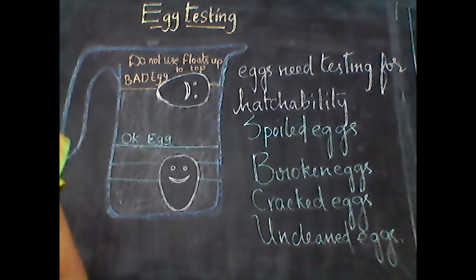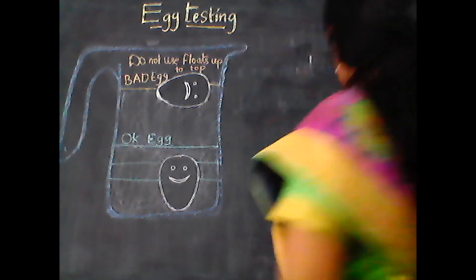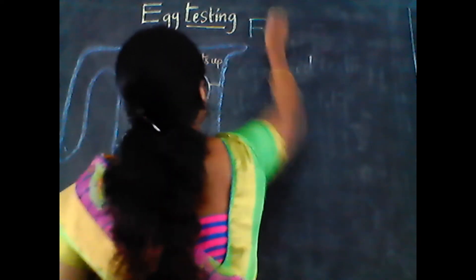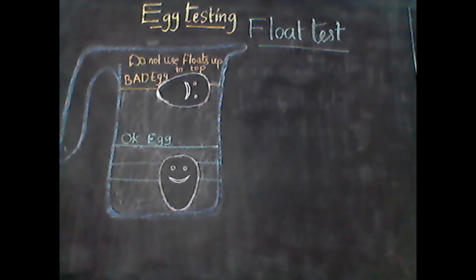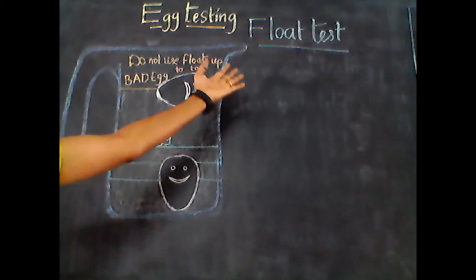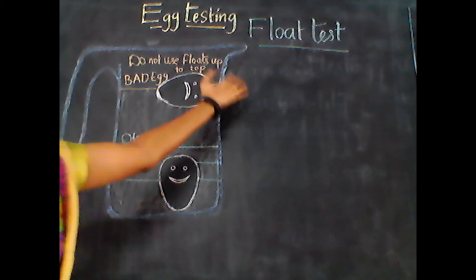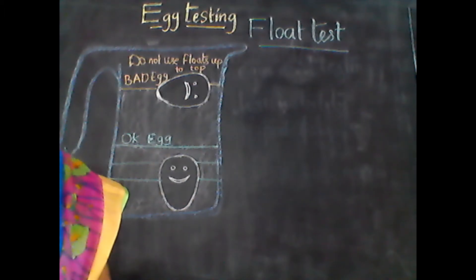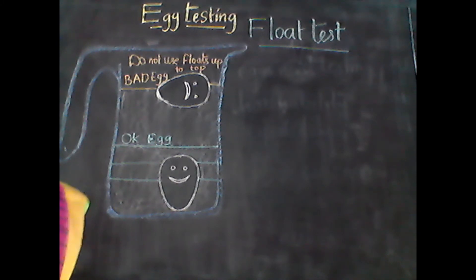The first one is the float test. The float test is a simple and effective method of testing the eggs for their viability, as it is easy to perform.